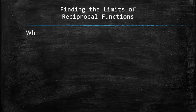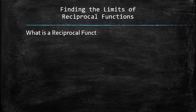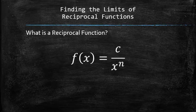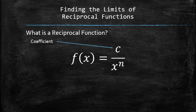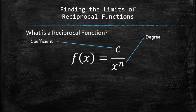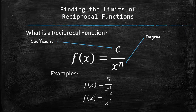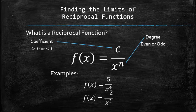First, let's figure out what a reciprocal function looks like. Reciprocal functions are the simplest rational functions, and all reciprocal functions have this form: a non-zero number c divided by x raised to some natural power n. The number c is called the coefficient, and the power of x is the degree of the denominator. Note that the coefficient can be either positive or negative, and the degree can be either even or odd.